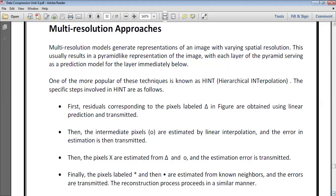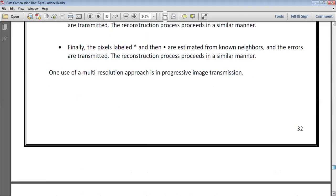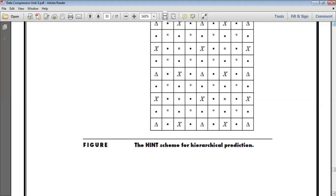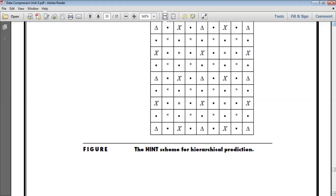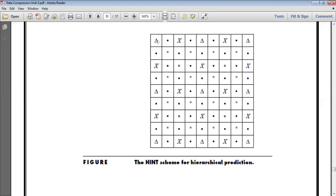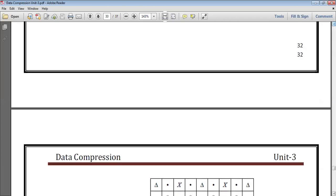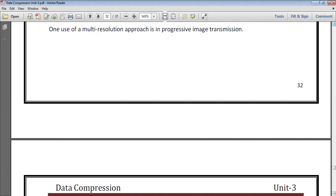First, I will show you the tabular representation of this. This is a HINT scheme, hierarchical interpolation for hierarchical predictions. There are some symbols denoted by triangle, some are dot, some are cross, some are star, and some are circle. This can be done with the help of HINT, and how we will perform this tabular representation is done with the help of following steps.